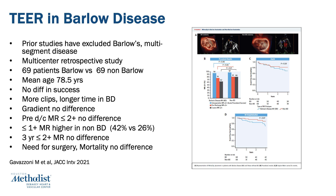This was a multi-center retrospective study recently published in JACC Interventions. There were about 69 patients with Barlow's disease and 69 patients without. Mean age was about 78.5 years. There was actually no difference in success with Barlow's disease versus non-Barlow's disease with MitraClip — though these are selected patients. More clips were utilized, not surprisingly, and the procedure took longer in patients with Barlow's disease.